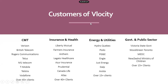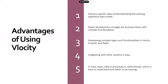There are many clients using Velocity. Well-known names include Verizon, British Telecom, Rogers, M1 Telecom, and even Vodafone has recently started using Velocity. Overall across domains, Velocity has more than 250-plus clients using it.